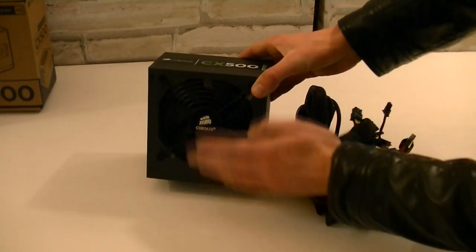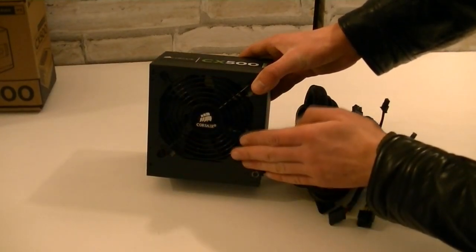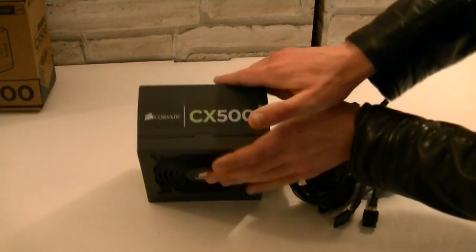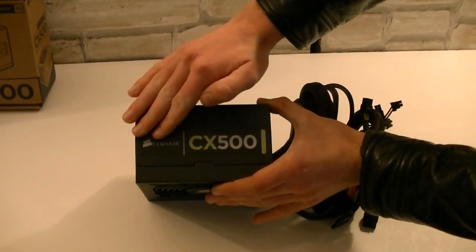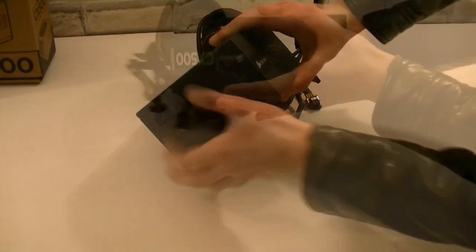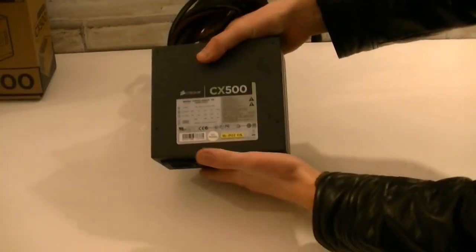So here is the unit unpackaged. It uses a 120mm fan for cooling and on the side it looks very nice in the case. Mostly you will install it that way. On the back is the on and off switch and lots of room for ventilation. Here is the other side. On the top you will see the specifications.